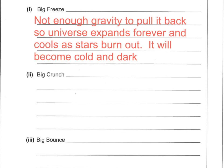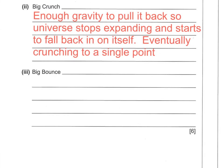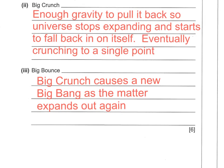The Big Crunch is the opposite — if there is enough gravity, the universe eventually stops expanding and collapses back on itself, returning to an extremely small, dense state. The Big Bounce is similar to the Big Crunch, except the collapse is thought to trigger another Big Bang — when the universe reaches its singularity point it bounces back into a new expansion.